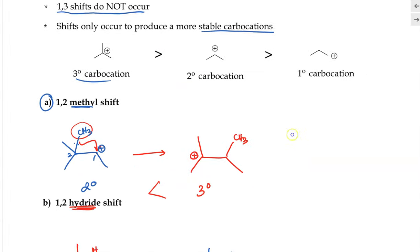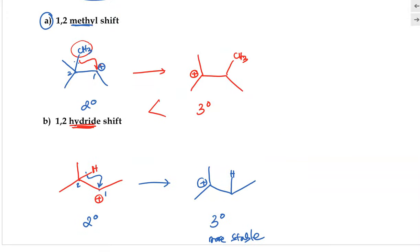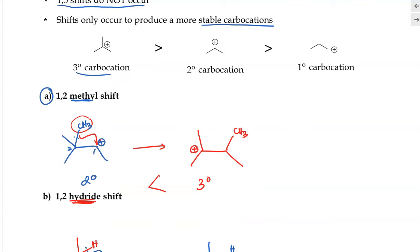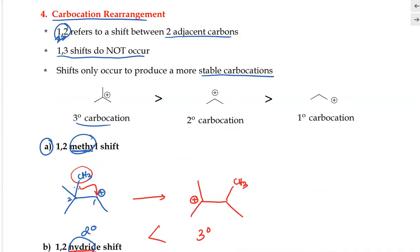These are the two ways a carbocation can rearrange: either through a 1,2 methyl shift or the 1,2 hydride shift. We do not observe ethyl, propyl, or any longer group shifts — only methyl shift or hydride shift. It can only shift between two adjacent atoms; 1,3 or 1,4 shifts do not occur — only the 1,2 shift.